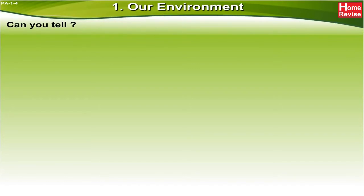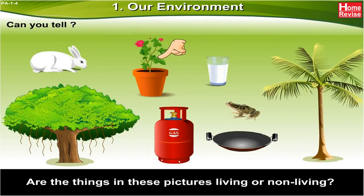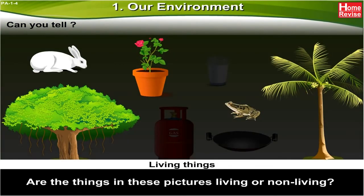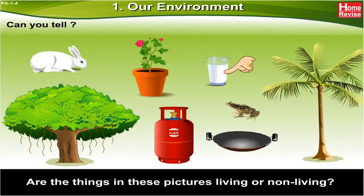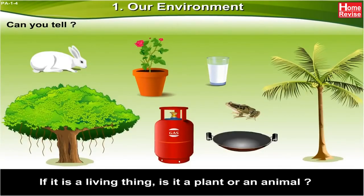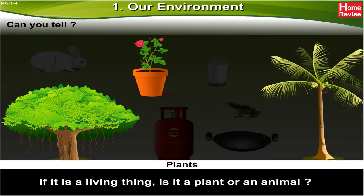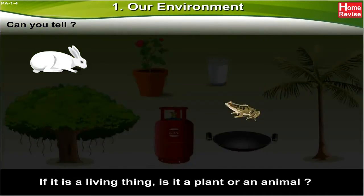Can you tell — are the things in these pictures living or non-living? The banyan tree, rabbit, frog, the potted rose plant, and the coconut tree are living things. The gas cylinder and the glass are non-living things. Among the living things, the banyan tree, the coconut tree, and the potted rose plant are plants, while the rabbit and the frog are animals.